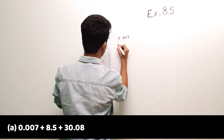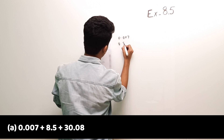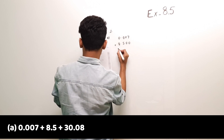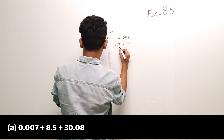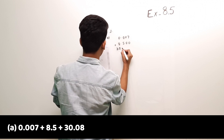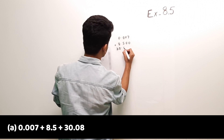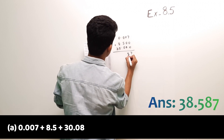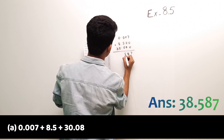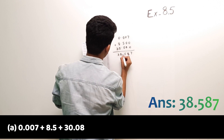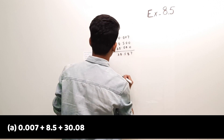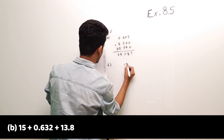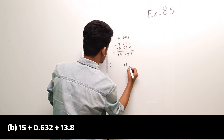Part (a): 0.007 plus 8.5 plus 30.08. We have to add these, so the answer is 38.587.